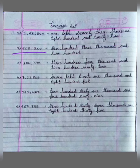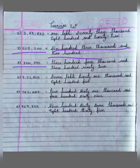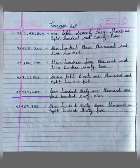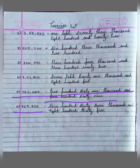Next, 603200. So we write 603200. Then next one is 304392 — this is the international place value system. Then next one is 7 lakh 21805, and we will write 7 lakh 21805. Next, 261469, and we write 261469. Then last one is 967835, and we write 967835.